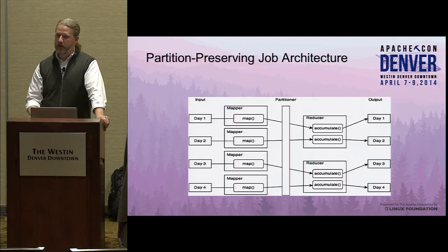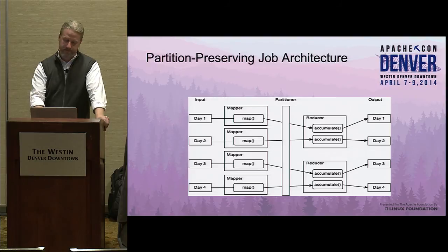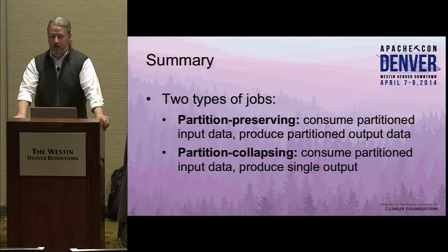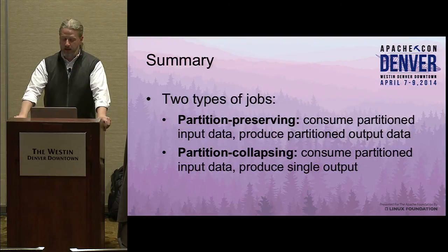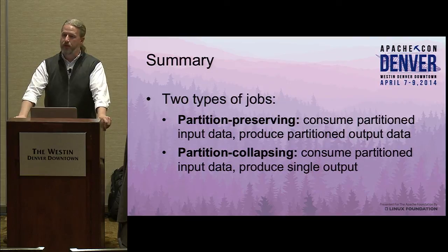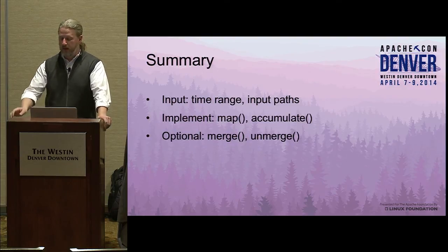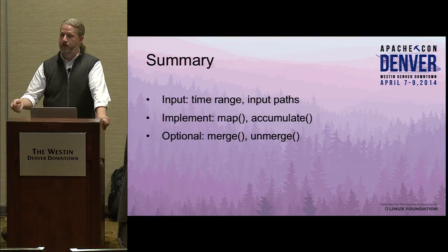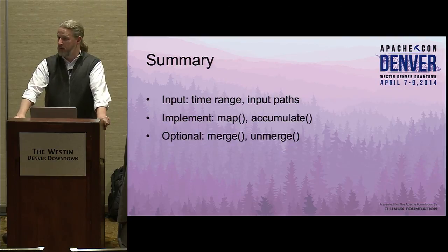In summary, Hourglass supports two types of jobs. One is partition preserving, where it consumes partitioned input data and produces partitioned output data. The other is a partition collapsing job, where it consumes the partitioned input data and produces a single output file. The advantage of this framework is that all you have to do is implement map and accumulate — how do I read my data in, and what is the accumulating function? Optionally, depending on if you want to do partition collapsing, you can implement the merge and the unmerge.